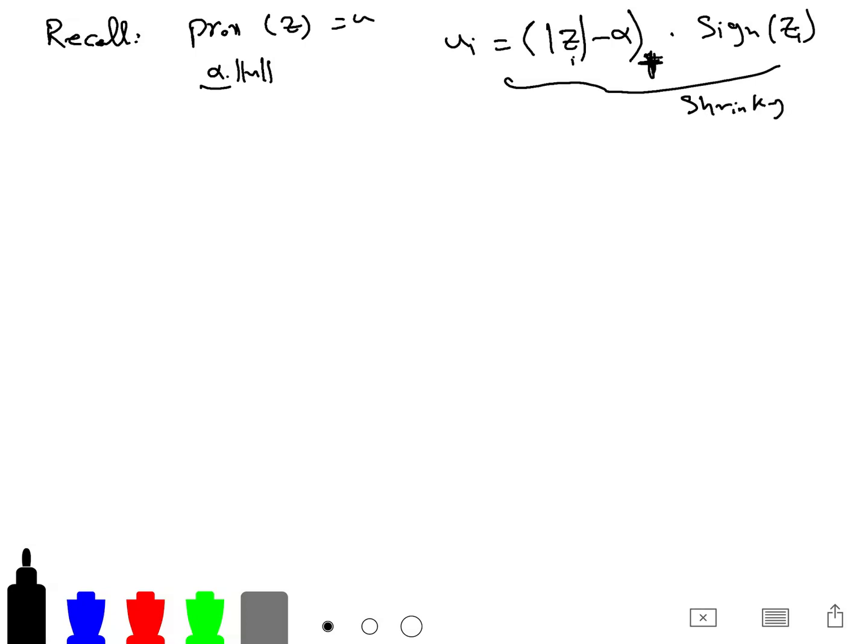For example, if you have alpha is equal to 1.5, and your z for example is -2.5, -0.0, and 2, then prox evaluates as 0, -1, this is 0 because it's less than alpha, and then 0.7.